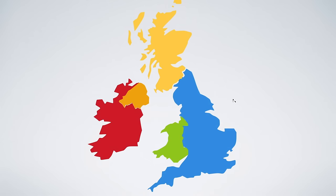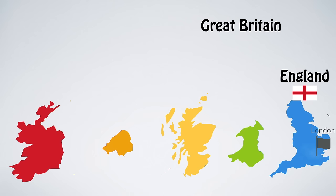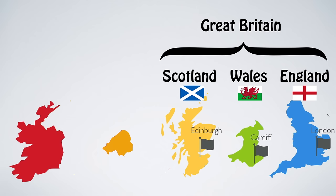On these two islands, there are five different regions, all with their own very specific history and culture. In Great Britain, you have England with its capital London, Wales with its capital Cardiff, and Scotland with its capital Edinburgh.